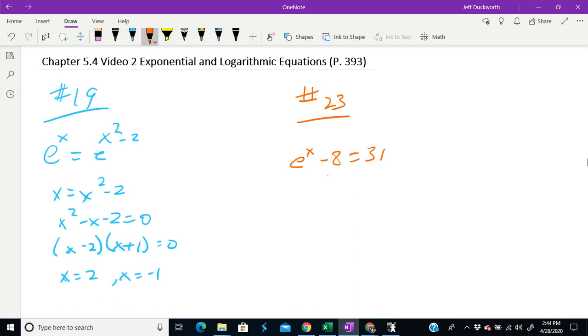So we can add 8 to each side. e to the x is equal to 39. So we have to get the x out of there, so we take the ln of both sides.